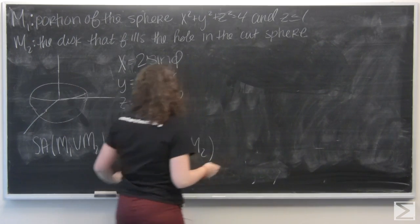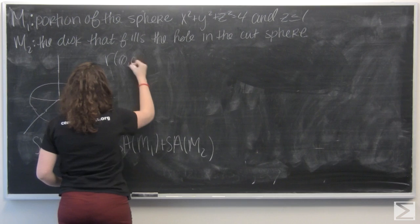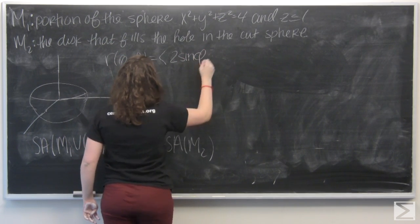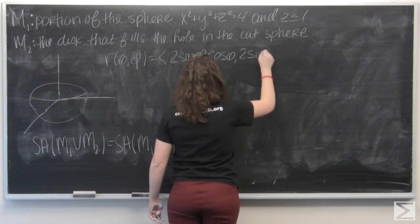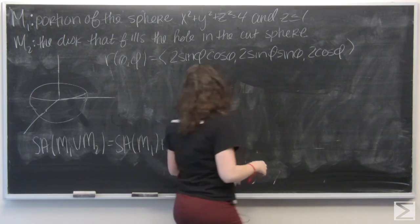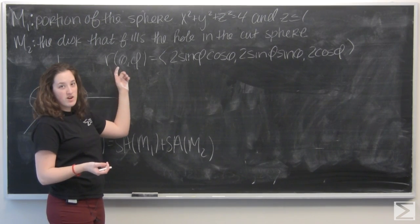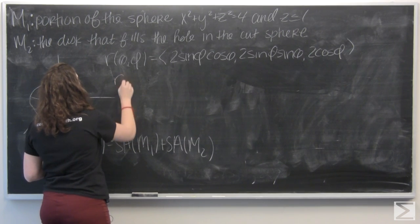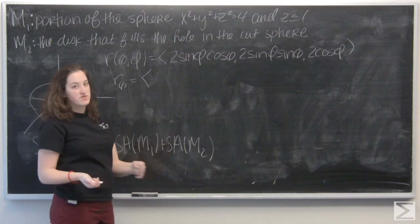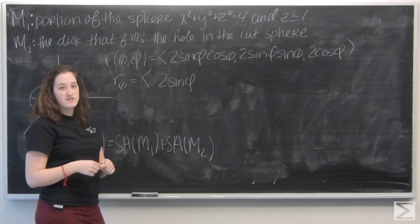Let's set up the parametrization of this surface and calculate ds, which is the magnitude of the cross product of r_θ and r_φ. So let's find those partial derivatives. For the first coordinate, 2 sin φ is treated like a constant and is carried through. The derivative of cos θ is negative sin θ.